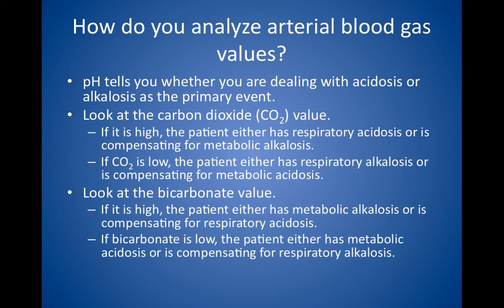Two, look at the carbon dioxide value. If it is high, the patient either has respiratory acidosis with a pH of less than 7.4, or is compensating for metabolic alkalosis with a pH of greater than 7.4. If the carbon dioxide is low, the patient either has respiratory alkalosis with a pH of greater than 7.4, or is compensating for a metabolic acidosis with a pH of less than 7.4.